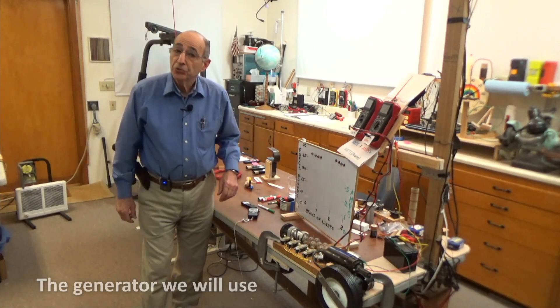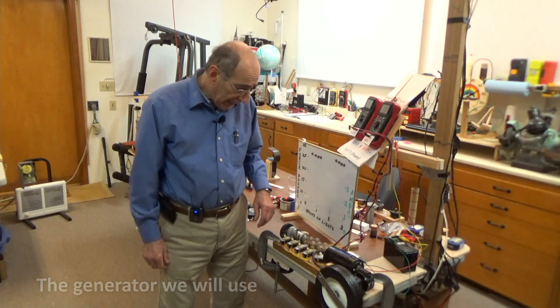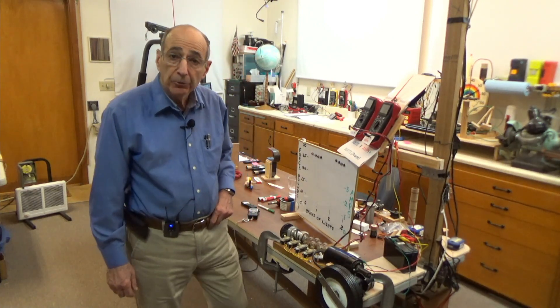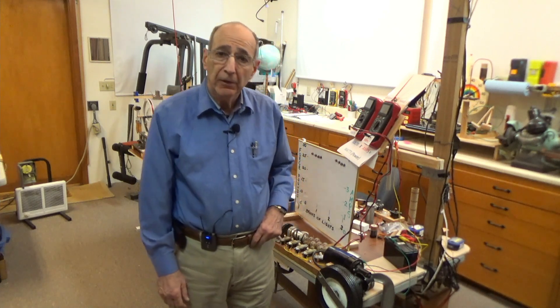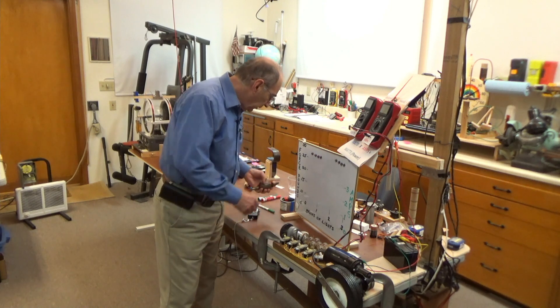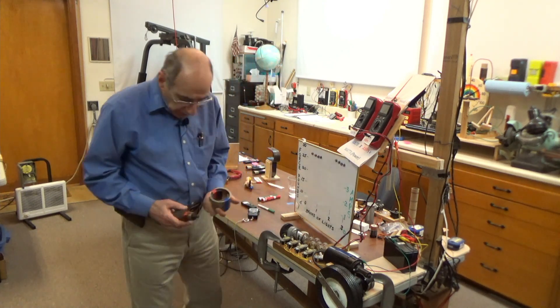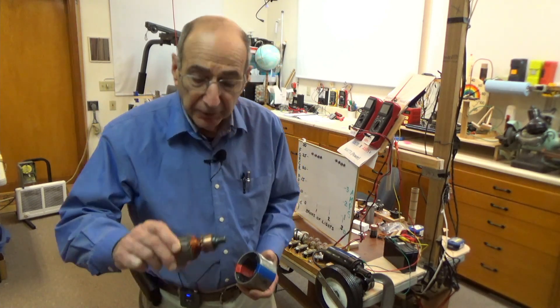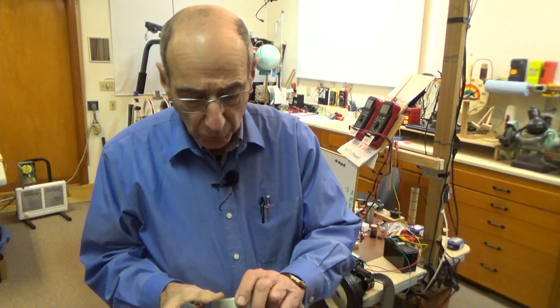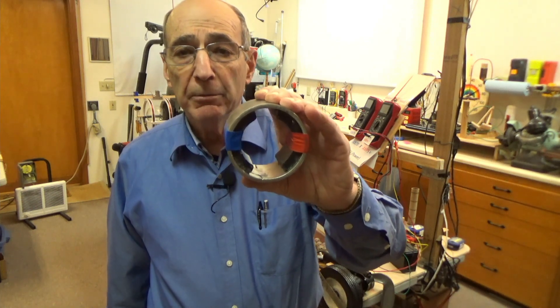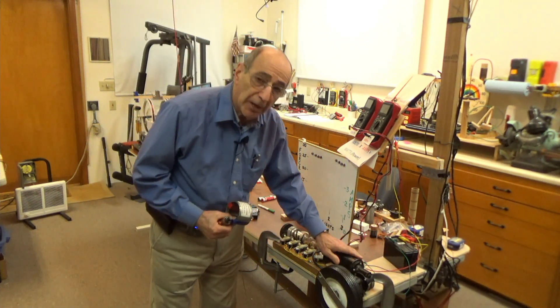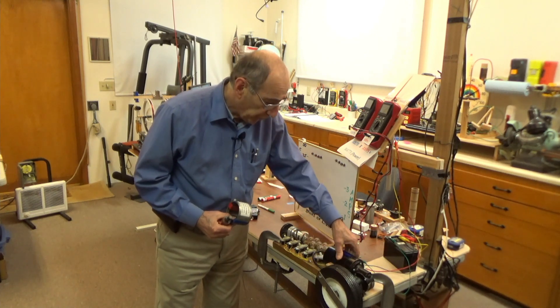Welcome to session 12. Last time we learned how we can generate electricity through an electromagnetic device. We picked a configuration, one of many, that was basically the commutator rotor with the stationary magnetic field produced by permanent magnets. And that's what's inside this generator here.